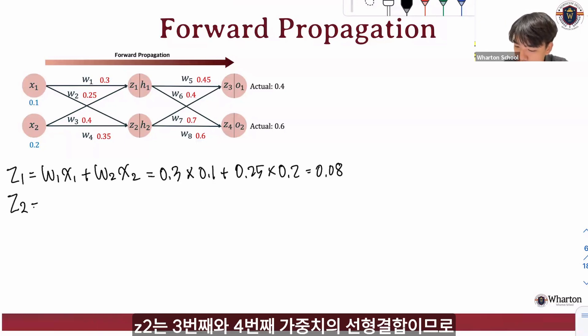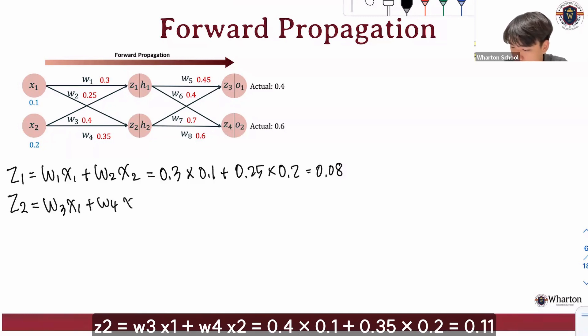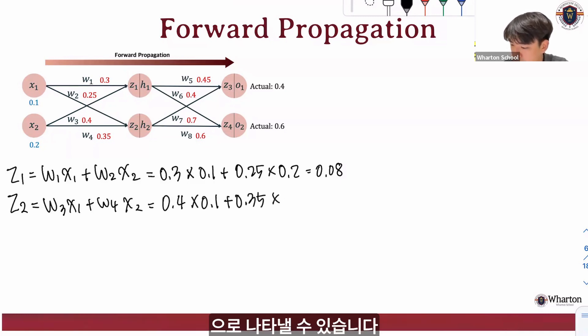And for z2, this is a linear combination of the third and fourth weight. So w3x1 plus w4x2, which is 0.4 multiplied by 0.1 and 0.35 multiplied by 0.2, which is 0.11.